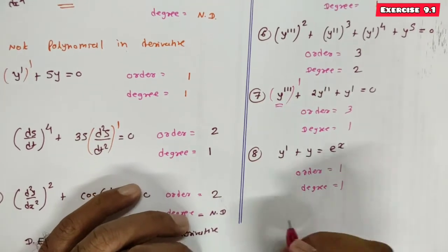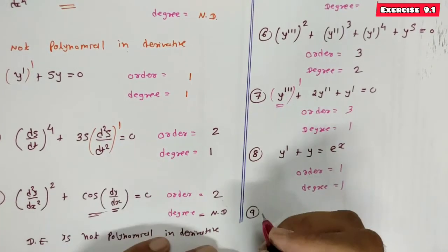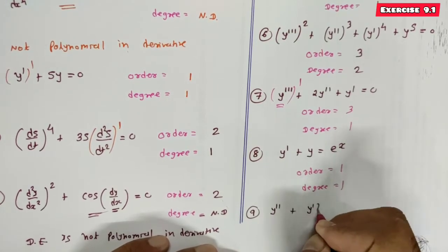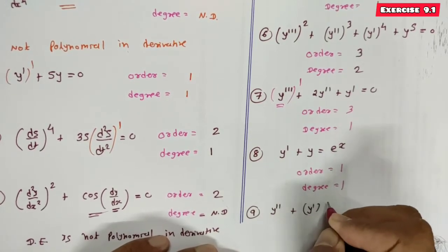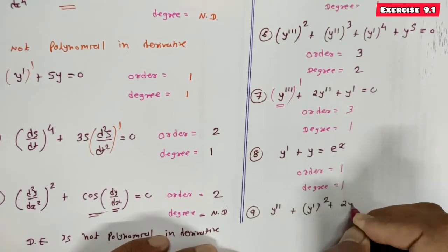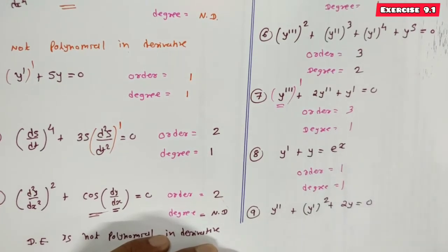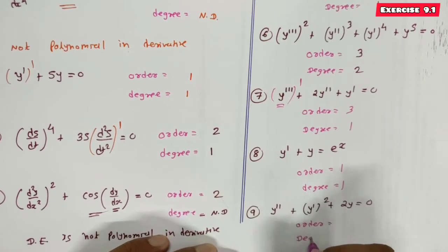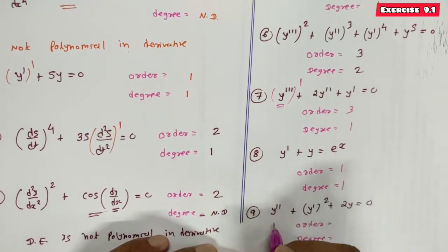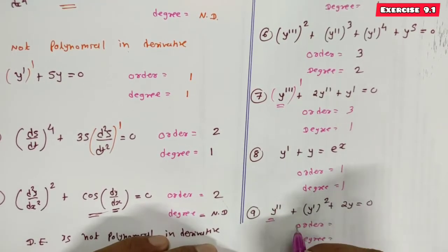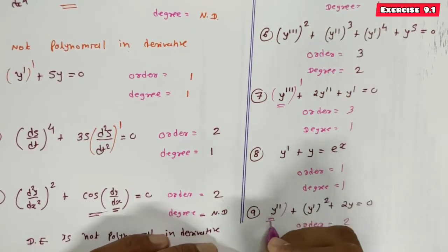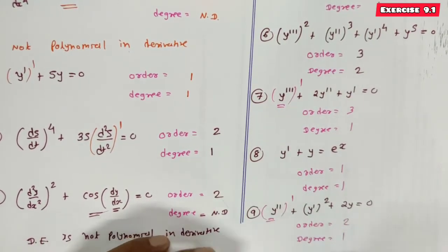Equation 9: y'' + (y')² + 2y = 0. The highest order derivative is 2, so order is 2. Its power is 1, so degree is 1.